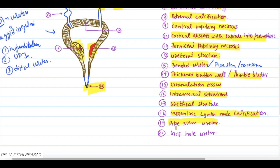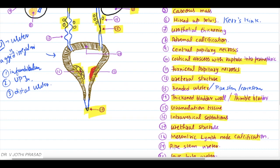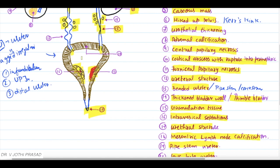The last finding is golf ball ureter. Golf ball, as you can see here, the golf ball ureter. It is due to the patulous ureteral orifice. So we have seen all 20 radiological features in case of renal tuberculosis.